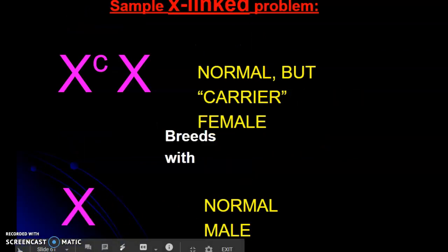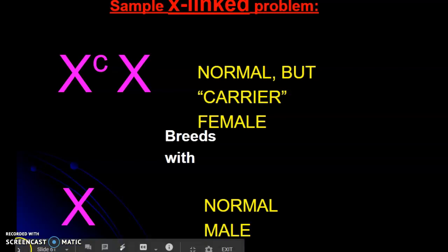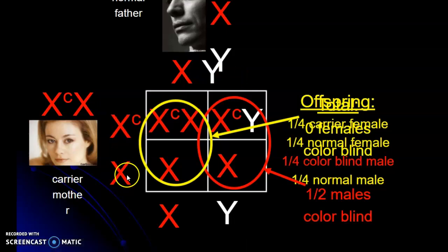Let's have a carrier female having babies with a normal male. Let's do that on its square. So basically normal male, XY. Then we put XC here, X. And then we fill in the square. So an XCX, that means we've got a carrier female here. XCY, we've got a colorblind male. XX, normal female. XY, normal male. So when we look at these XY genes, it's telling us two things. Does it have the trait we're looking at, in this case colorblindness, and is it male or female?